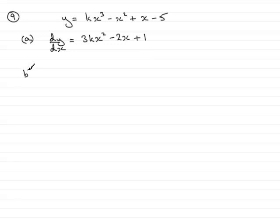In part B, we're told that we have a point A with x-coordinate minus half. It lies on the curve C, and the tangent to C at A is parallel to the line with equation 2y minus 7x plus 1 equals 0. We've got to find the value of k.